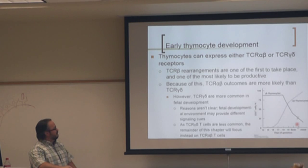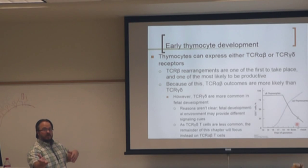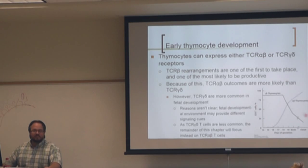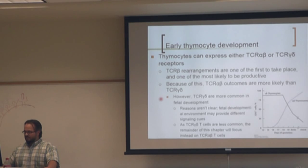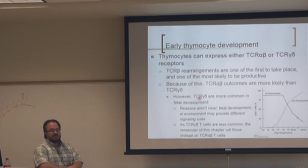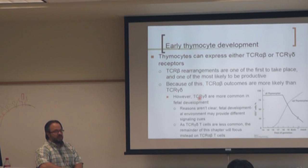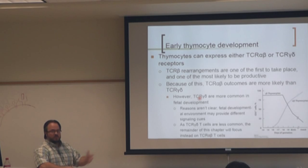The beta and gamma-delta rearrangements are happening at the same time, but your chances of getting a successful beta are much more likely than getting a successful gamma and delta. Whichever one is successfully rearranged first will determine whether you become an alpha beta or a gamma delta T cell. If you don't get a successful beta and don't get a successful gamma delta, those cells are going to die.